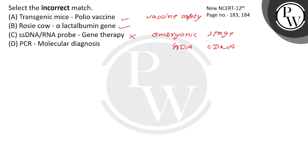If done in bone marrow cells, it is permanent. Otherwise, lymphocytes from the patient are cultured and ADA cDNA is introduced using a retrovirus vector. The lymphocytes don't have a long life, so the therapy has to be repeated. So RNA and DNA probes are not used in gene therapy — this option is incorrect.